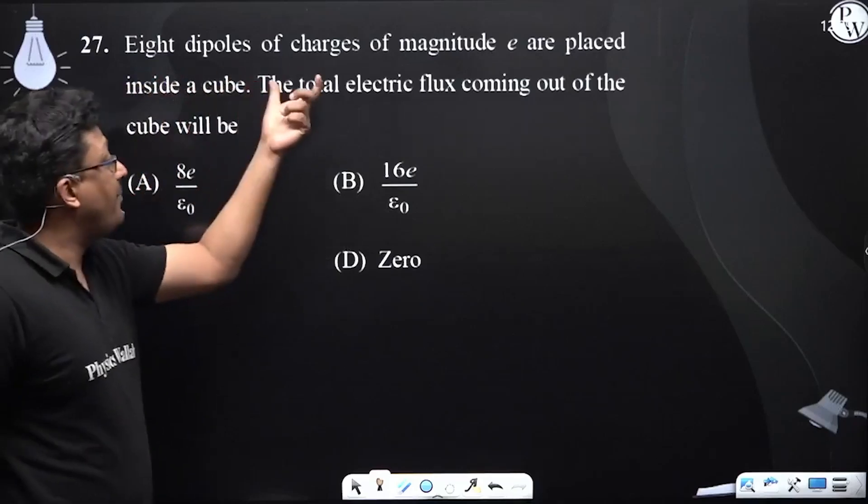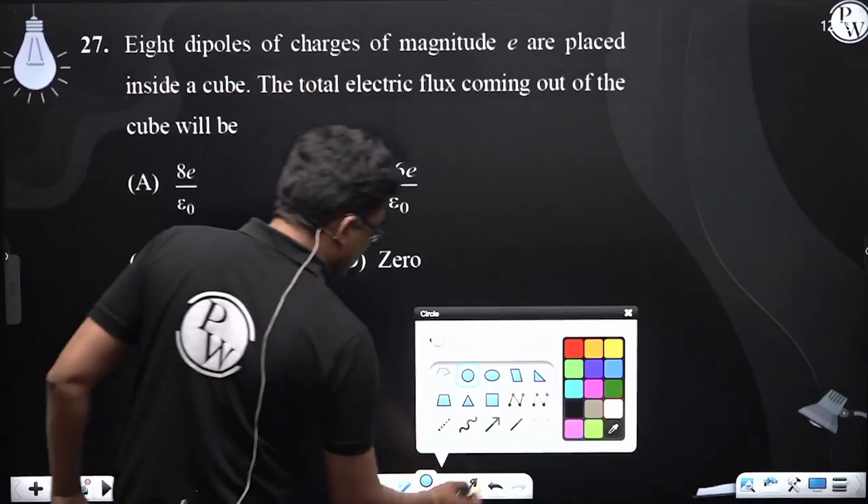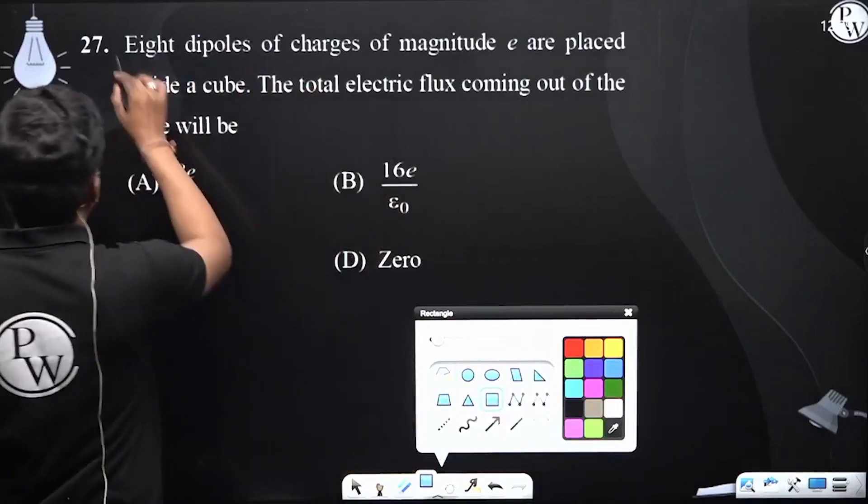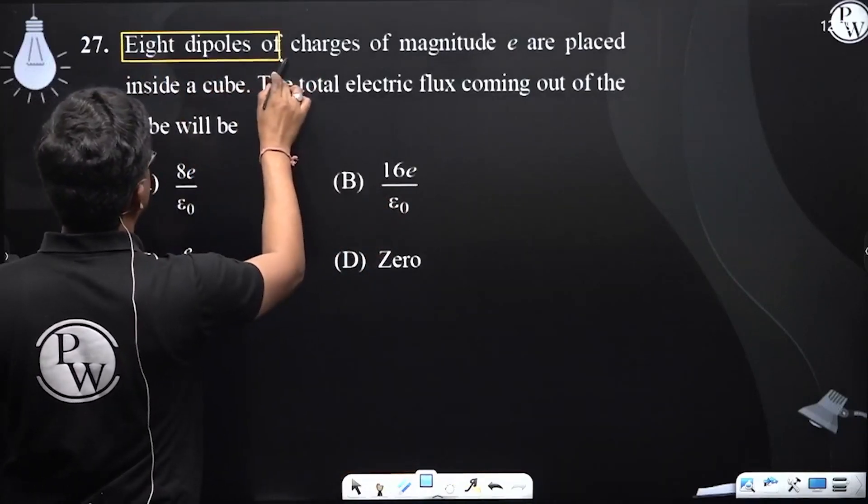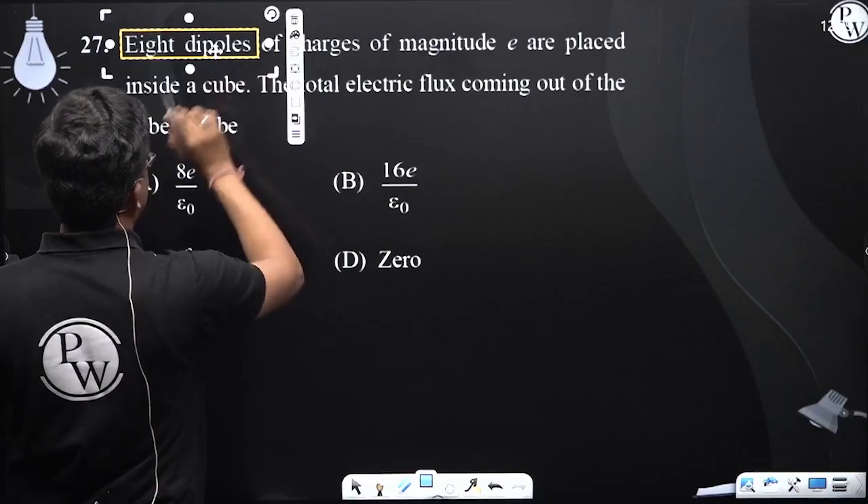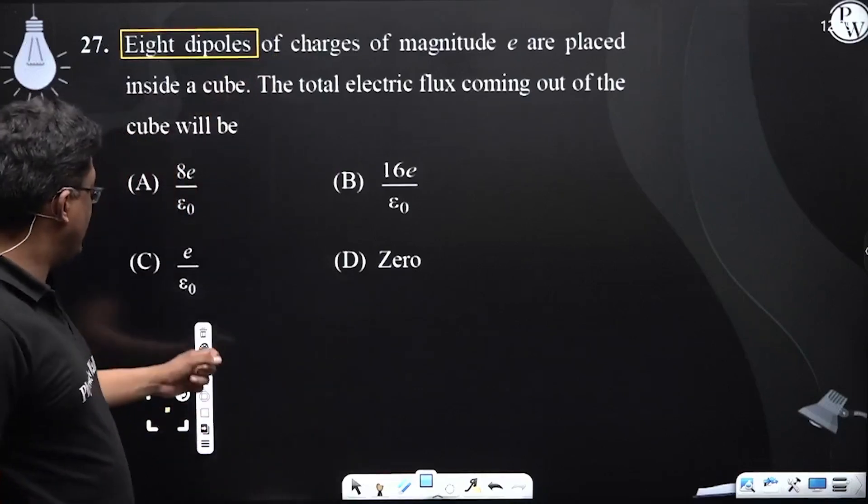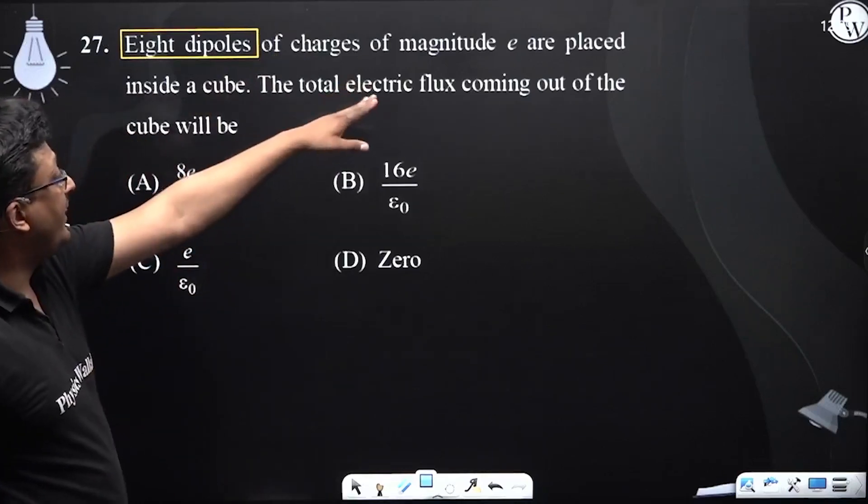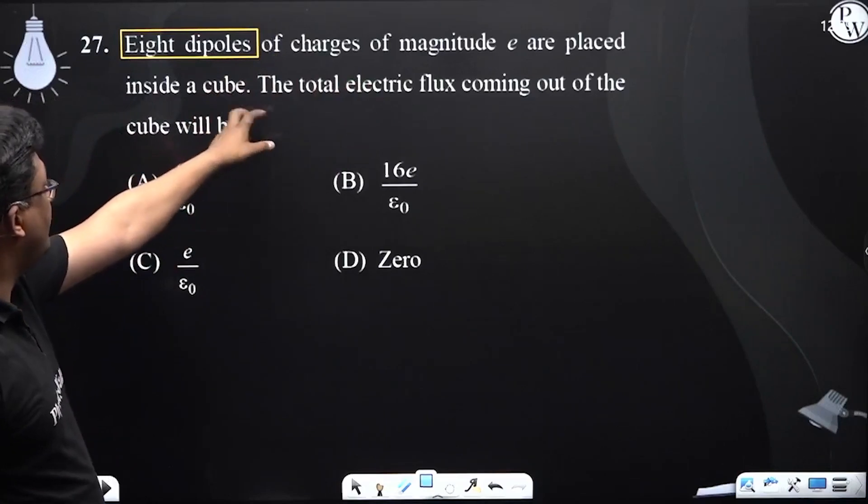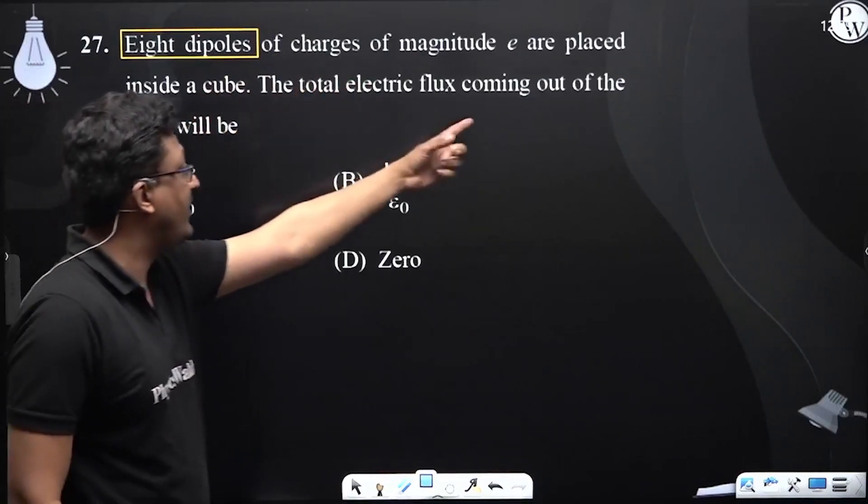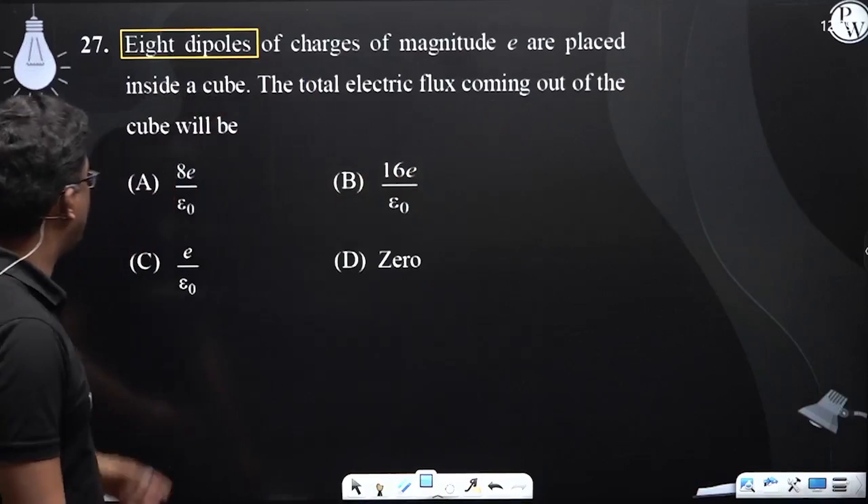Question number 27: Eight dipoles of charges of magnitude e are placed inside a cube. The total electric flux coming out of the cube will be